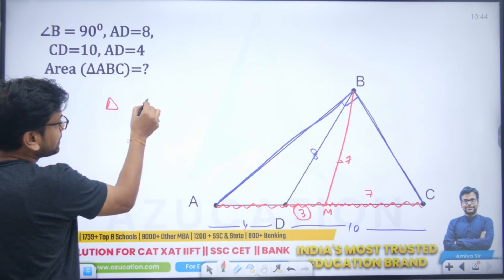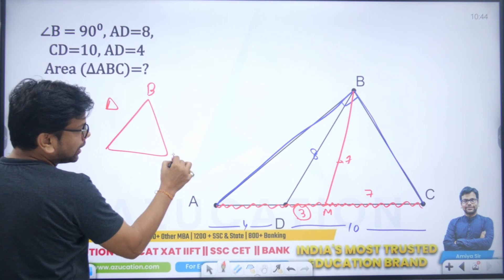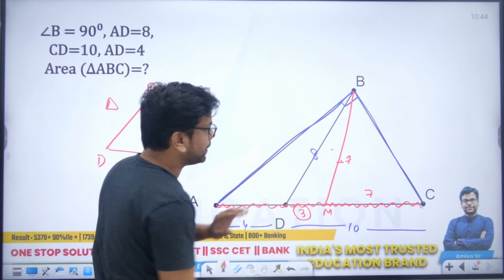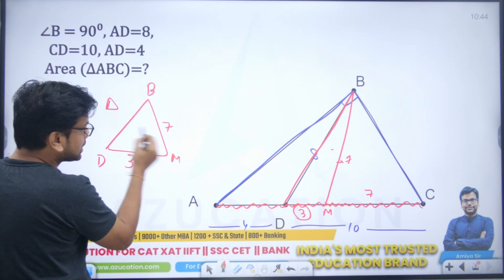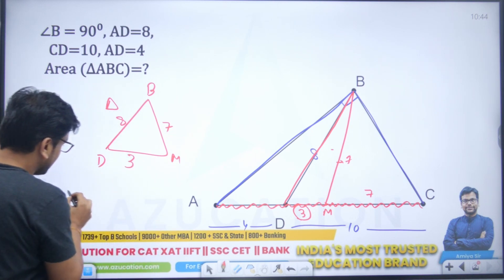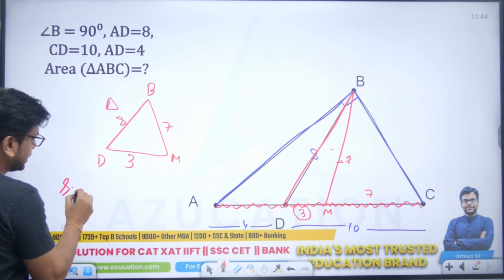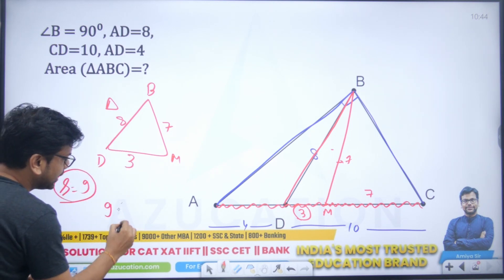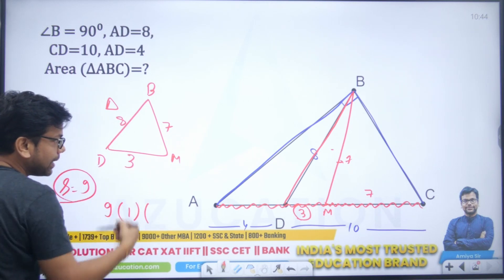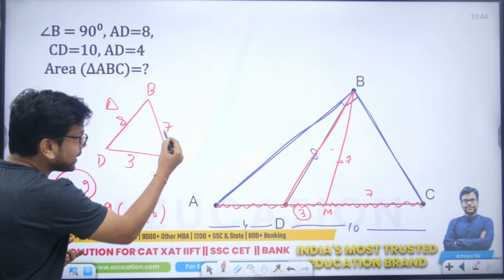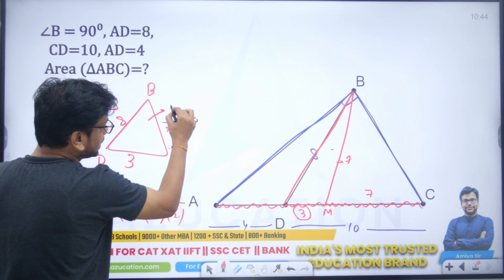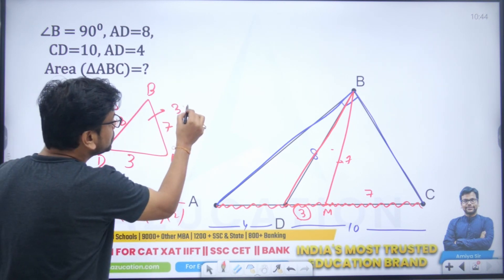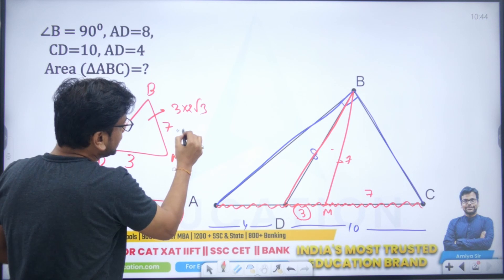Now focus on triangle BMD, this red one. This is 7, this one is 3, 7, 8. We need to find the area of this triangle. By Heron's formula, semi-perimeter is 18 divided by 2, which is 9. So the area is equal to square root of 9 into 9 minus 8 which is 1, 9 minus 3 is 6, and 9 minus 7 is 2. From the 9, we can say this becomes area is 3 times square root of 12. 12 is 2 root 3, so the area is 6 root 3.